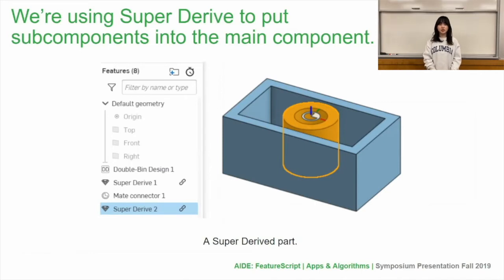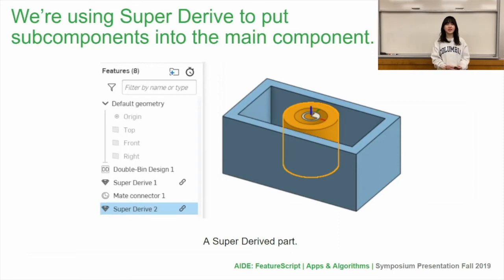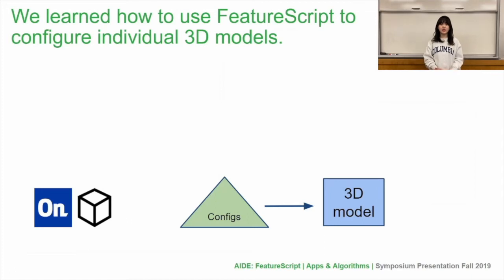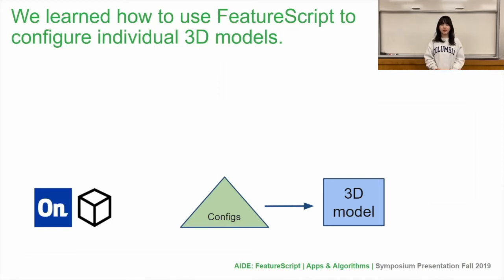Once you have single components designed, we use SuperDerive to design multiple components for the main component. A regular derive takes a part from a Part Studio and puts it into scope. However, what SuperDerive does is it allows users to change the configuration of a derived Part Studio through a JSON string. For the extension of the toy problem, we wanted to connect configuration from one subcomponent with another subcomponent — meaning we tried to have our main component use calculated values from one subcomponent to determine the dimensions of another. We learned how to use FeatureScript to configure individual 3D models, and the diagram describes how we interact with AID Onshape. The Onshape team builds the 3D CAD model using configurations, and we take an input of flow rate or temperature to use a feature that can change the configuration of the 3D Onshape model.